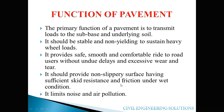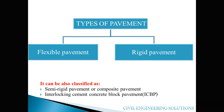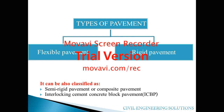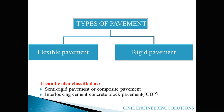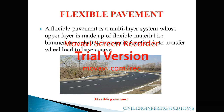The pavement should provide a non-slippery surface having sufficient skid resistance and friction under wet conditions. Another main function of pavement is that it limits noise and air pollution. Pavements are mostly classified as flexible pavement and rigid pavement, which are the two most common types. Pavement can also be classified as semi-rigid pavement, composite pavement, or interlocking cement concrete block pavement.